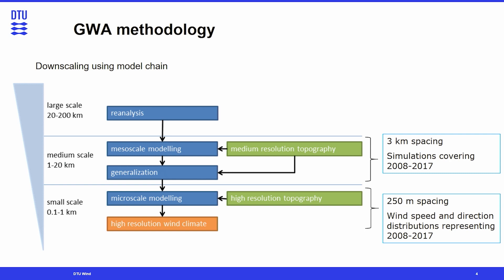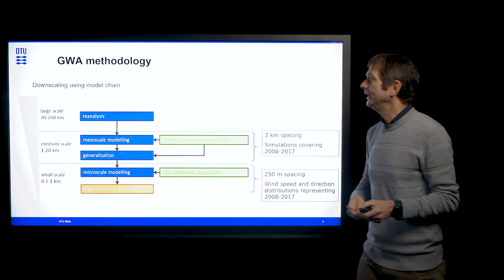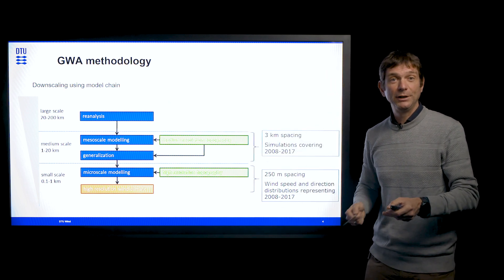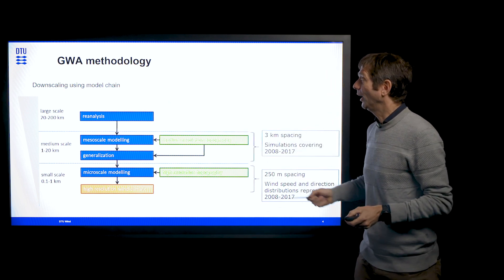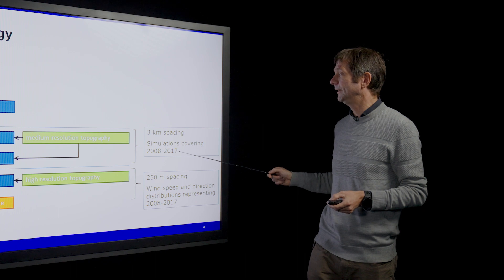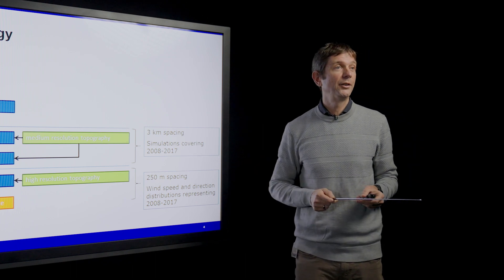So how do we actually generate the Global Wind Atlas? What is the Global Wind Atlas methodology? We use the downscaling model chain. We start with global datasets from reanalysis datasets, and then we move to the mesoscale modeling, where simulations were performed from 2008 to 2017 at 3 km spacing.